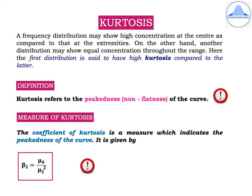A frequency distribution may show high concentration at the center as compared to that at the extremities. On the other hand, another distribution may show equal concentration throughout the range. The first distribution is said to have high kurtosis compared to the latter. So, what is kurtosis?